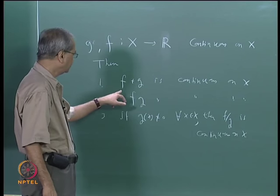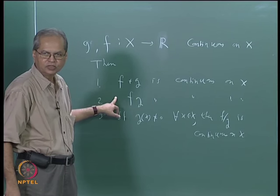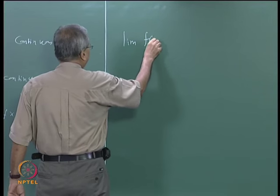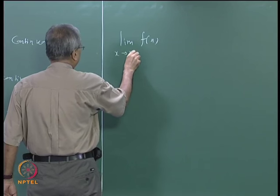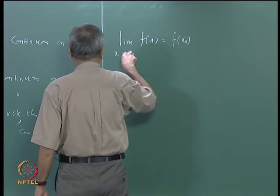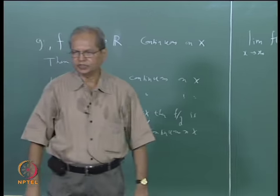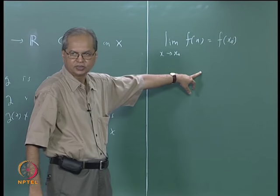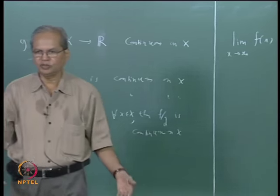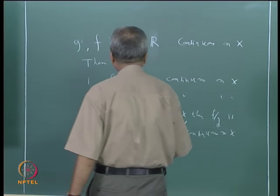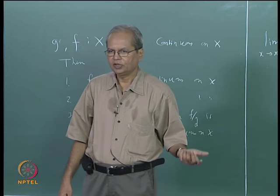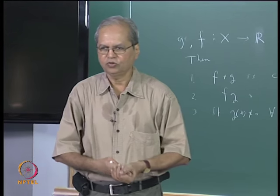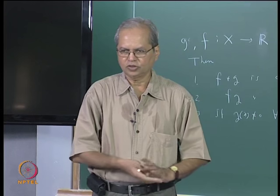For example, we have already proved that limit of (f plus g)(x) as x goes to x-naught equals f(x-naught) plus g(x-naught). If x-naught is a limit point, saying that f is continuous at x-naught means the limit of f(x) as x tends to x-naught is f(x-naught). Similarly, continuity of g at x-naught means the limit of g(x) is g(x-naught). By the corresponding theorem of limits, limit of (f plus g) at x-naught equals f(x-naught) plus g(x-naught), showing f plus g is continuous. Similarly, the other two things can also be proved.